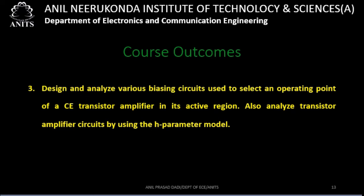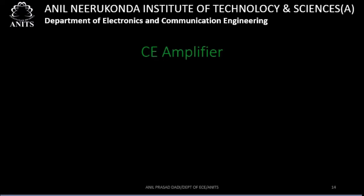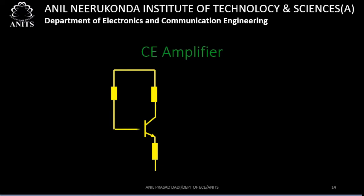I will now show how a CE amplifier circuit and a biasing circuit look like, so you can understand what design and analyze mean in this context. I have considered an NPN transistor here. This is the biasing circuit. I have considered four resistors along with the transistor.